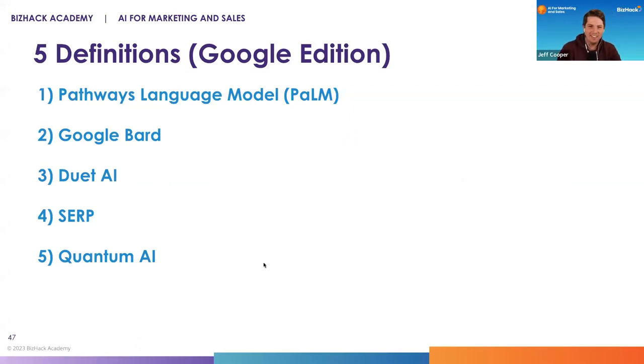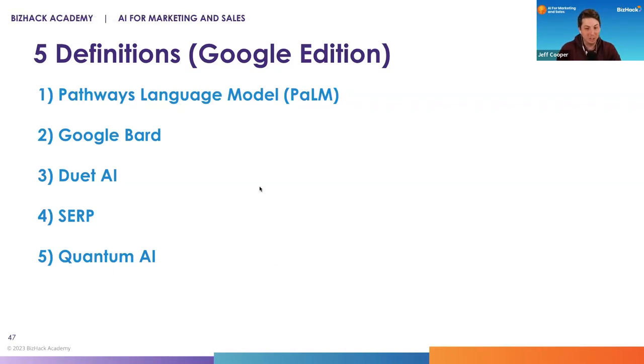We're going to cover five things today: something called PaLM, Google Bard, Duet, SERP, and Quantum AI. So let's get into it.